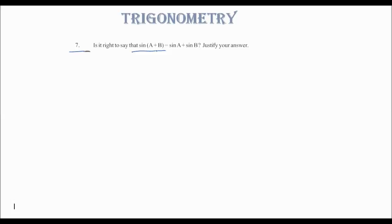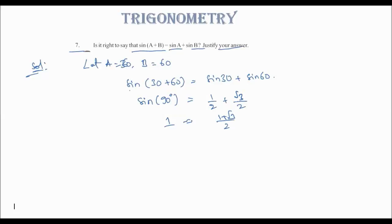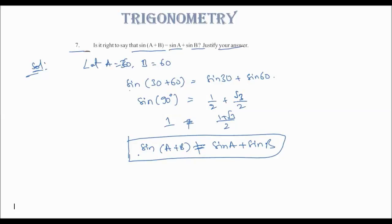Seventh question: Is it right to say that sin(A+B) = sinA × sinB? Let A = 30, B = 60. LHS: sin(30+60) = sin90 = 1. RHS: sin30 + sin60 = 1/2 + √3/2 = (1+√3)/2, which is not equal to 1. So these are not equal, and sin(A+B) = sinA·sinB is NOT correct. Thank you children, have a good day.